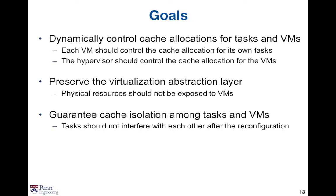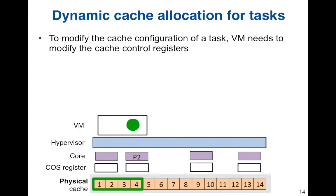We want to dynamically control the cache allocation for tasks and VMs. We want each VM to control the cache allocation for its own tasks, and the hypervisor should control the cache allocation for the VMs. When we enable dynamic cache management, we don't want to break the virtualization layer — we don't want to directly expose the physical resources to VMs, because this will break the benefit of virtualization. In addition, we don't want to violate cache isolation. The tasks should not interfere with each other after we reconfigure the cache for the tasks.